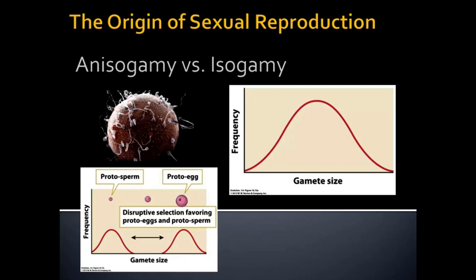In most species with sexual reproduction we have males and females. There are a few species that have isogamy — 'iso' meaning equal — where there's no clear distinction between males and females and every gamete can fuse with every other. But isogamy is very rare. Anisogamy — having males and females — is by far the most common strategy, found in 99.9% of all sexually reproducing species.